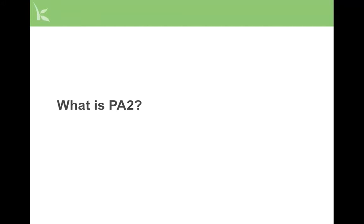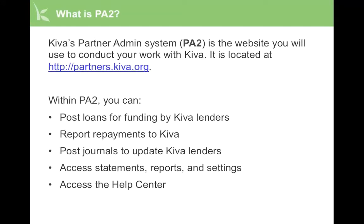So what exactly is PA2? Kiva's Partner Admin System is the website you will use to conduct your work with Kiva. It is located at http://partners.kiva.org. Within PA2, you can post loans for funding by Kiva lenders, report repayments to Kiva, post journals to update Kiva lenders, access statements, reports, and settings, and access the Help Center.